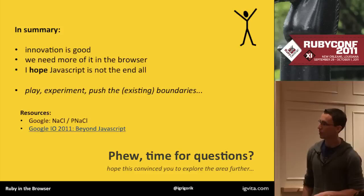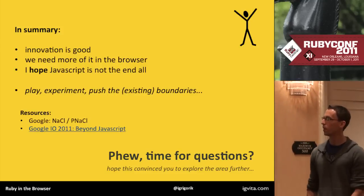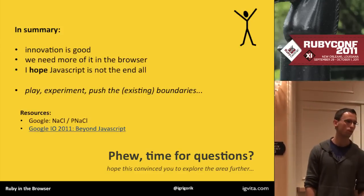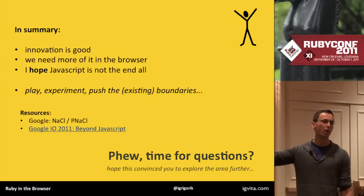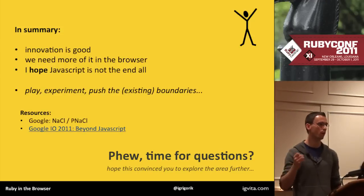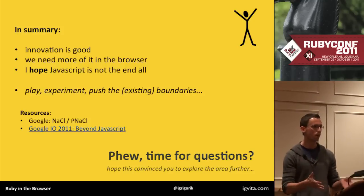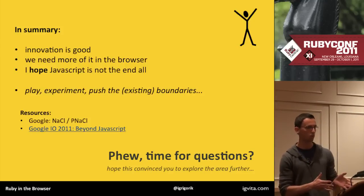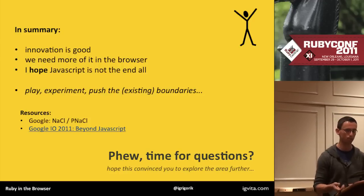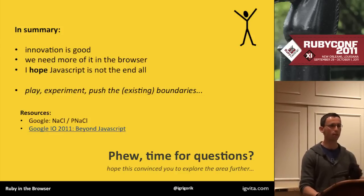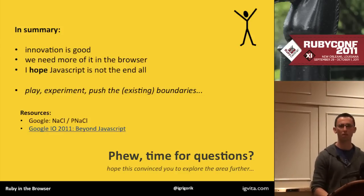In terms of actual resources — I've covered a lot of ground. You can just Google for NaCl and PNaCl; there's quite a bit of interesting information available. There's a really good Google I/O session with an available video that talks in depth about how this thing works, how you connect it, and gives you a play-by-play example of building a native client extension for the browser. So, with that, thank you very much. Any questions, thoughts, ideas, complaints?